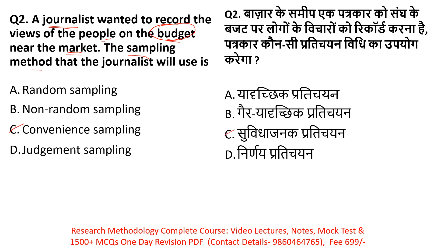The answer is Convenience Sampling, which we call Suvidha Janak Pratichayan, also known as Accidental Sampling — both names are very important to remember. The journalist is sitting in a marketplace and will approach some people for their opinion. If a person responds, they take the opinion; if not, they move on to another person. The researcher has not pre-decided which specific person to select — it is accidental.